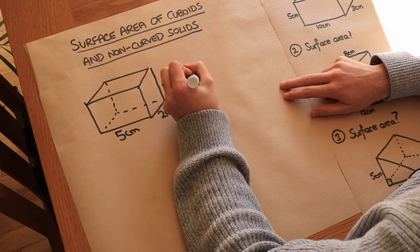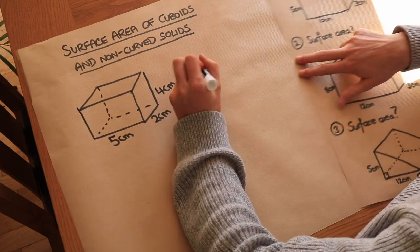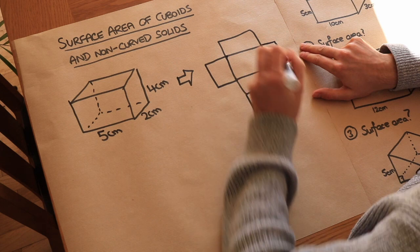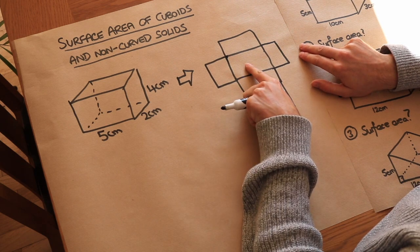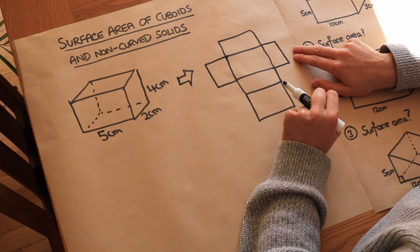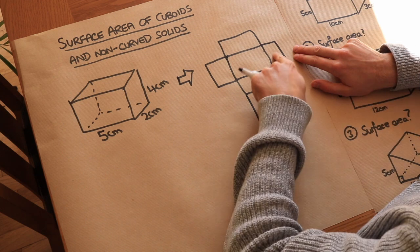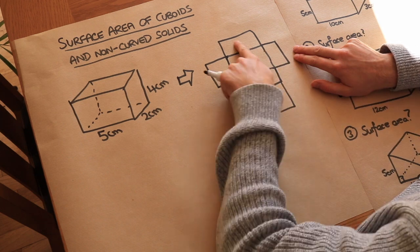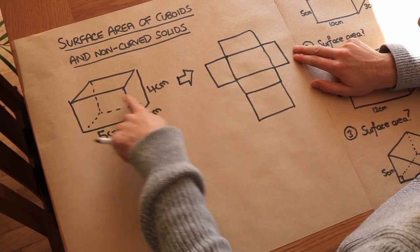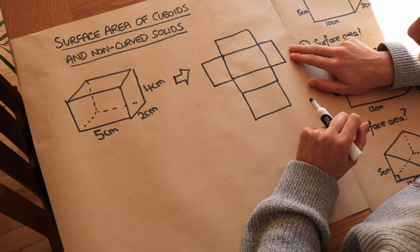Another way of thinking about it is that if you were to draw the net of this solid, the area of that net would be the same as the surface area of the solid, because finding the area of all those different regions in the net is the same as finding the area of all the different faces of the 3D solid.